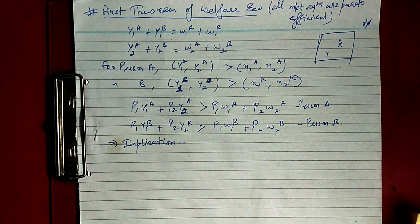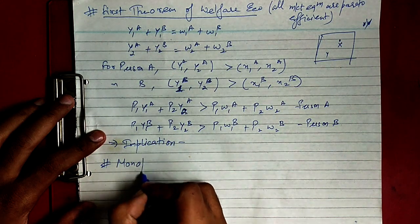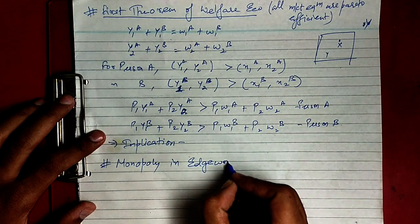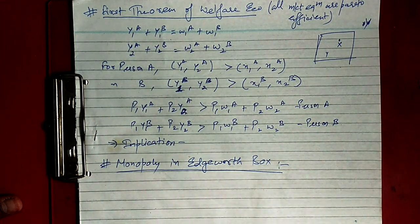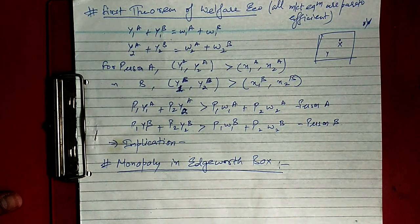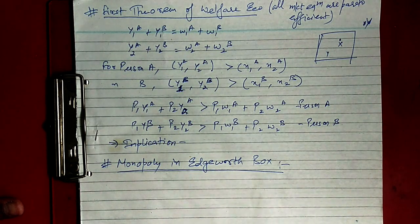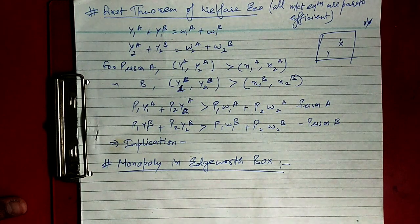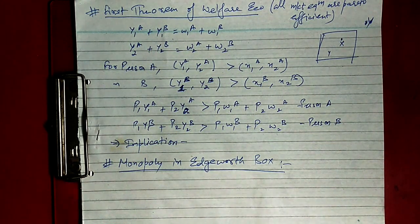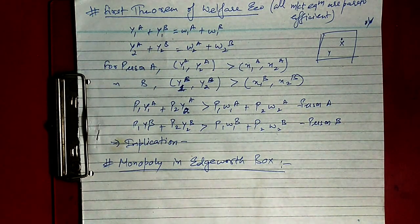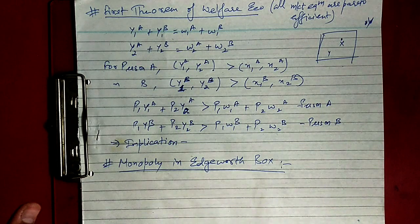Now we move on to monopoly in the Edgeworth box. A competitive market shall be Pareto efficient — that is our First Theorem. This implies that if one or more conditions for perfect competition are violated, the allocation mechanism shall not be Pareto efficient. We consider monopoly as our first case where perfect competition does not hold.